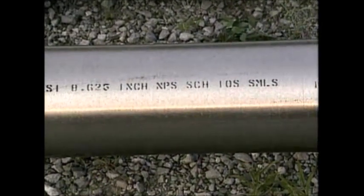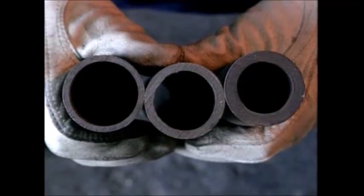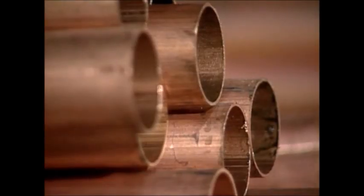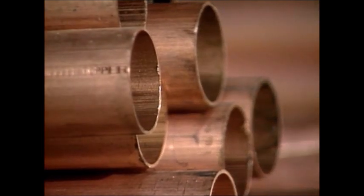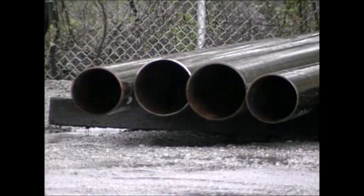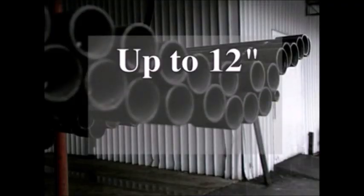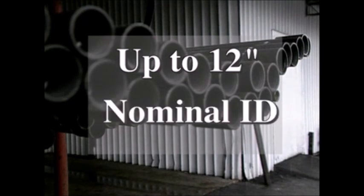This part will explain how pipe size is measured, what is meant by pipe schedule, and identify common piping materials. Commercial piping is available in sizes from 1/8 inch to 48 inches in diameter, and specialized piping may be even larger. Up to 12 inches, the nominal pipe size, or NPS, refers to the nominal inside diameter, which differs slightly from the actual inside diameter, or ID.